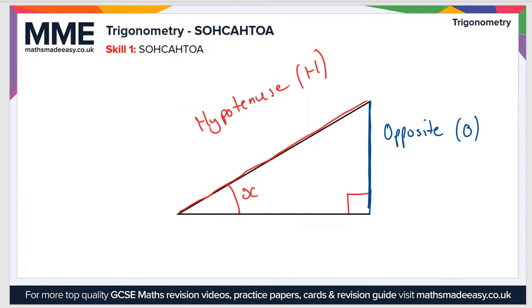And then finally, the side that's alongside the angle, but not the hypotenuse, is known as the adjacent side, or a for short.